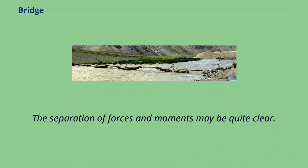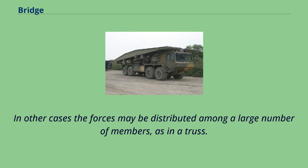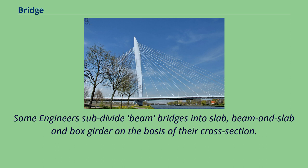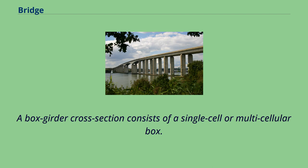In a suspension or cable-stayed bridge, the elements in tension are distinct in shape and placement. In other cases the forces may be distributed among a large number of members, as in a truss. Some engineers subdivide beam bridges into slab, beam-and-slab, and box girder on the basis of their cross-section. A slab can be solid or voided, while beam-and-slab consists of concrete or steel girders connected by a concrete slab. A box girder cross-section consists of a single cell or multicellular box.